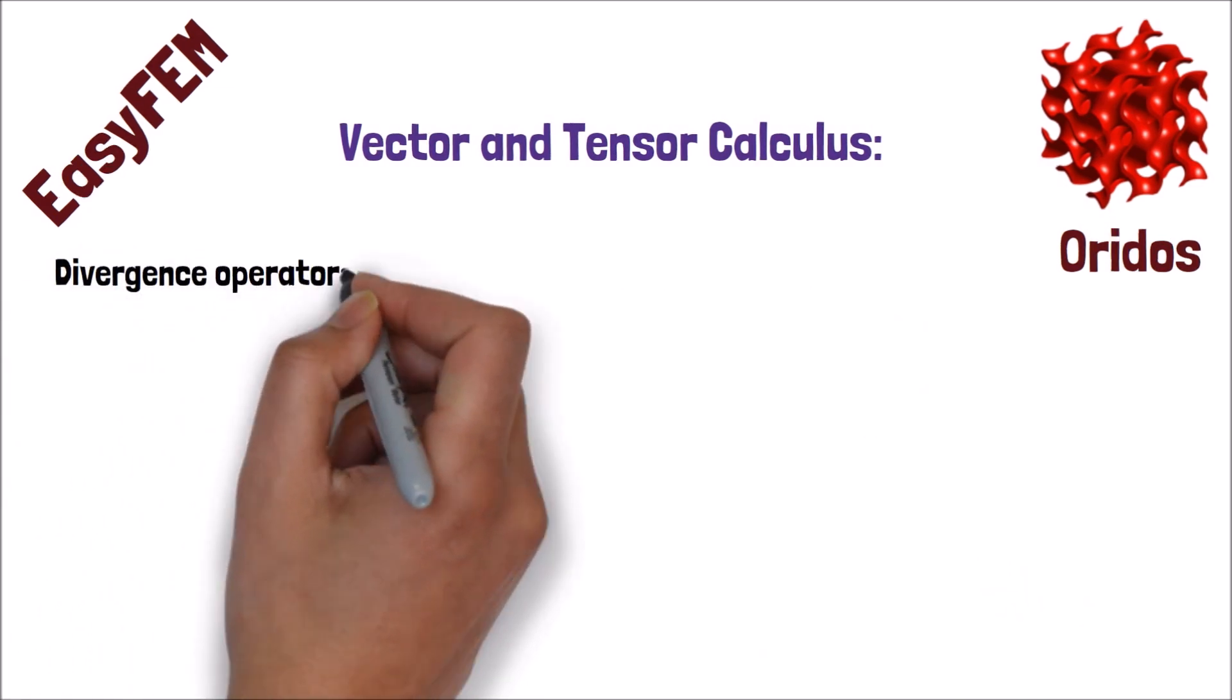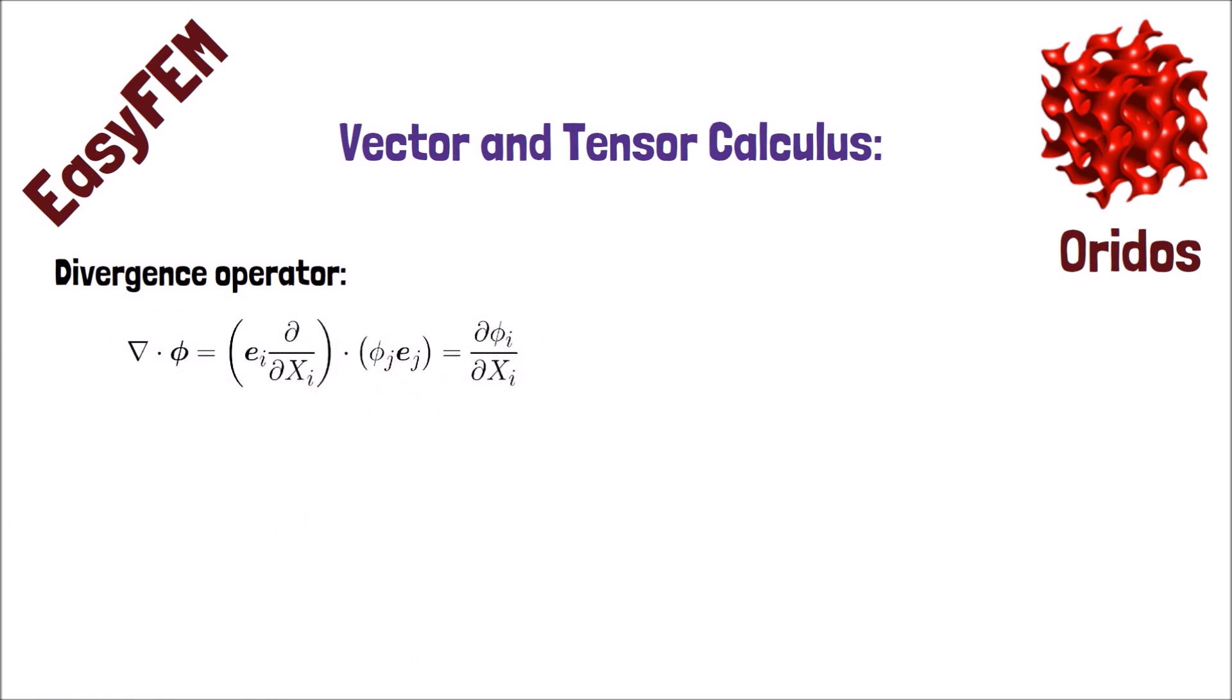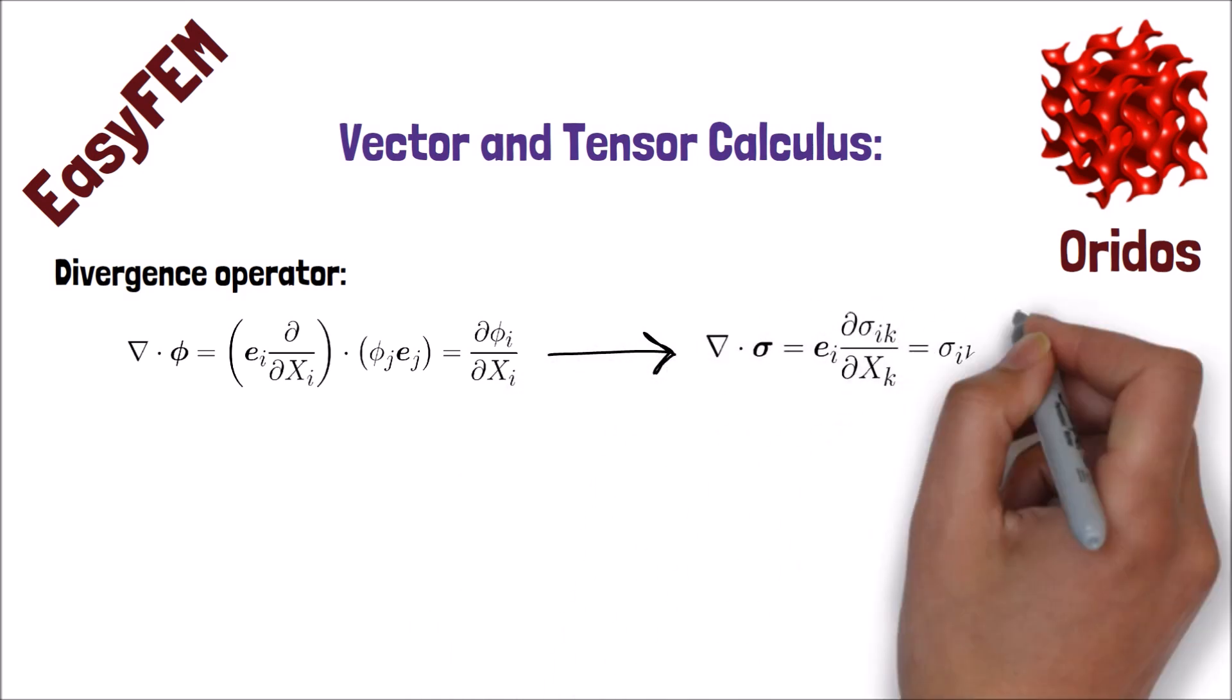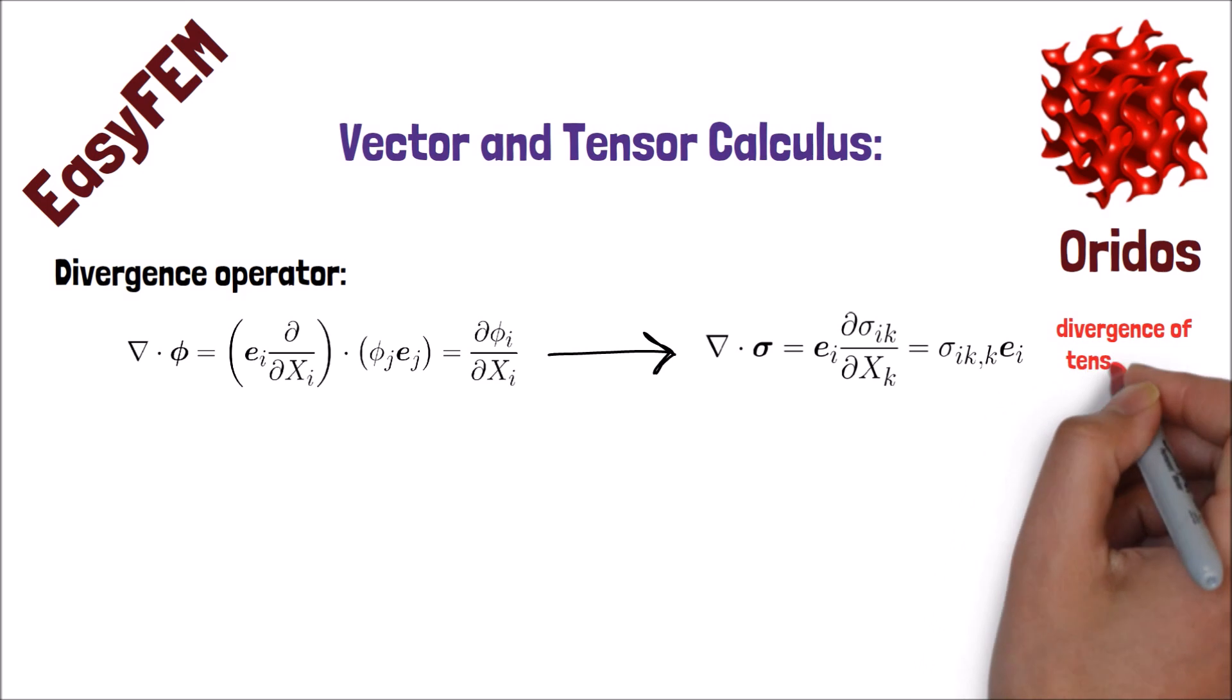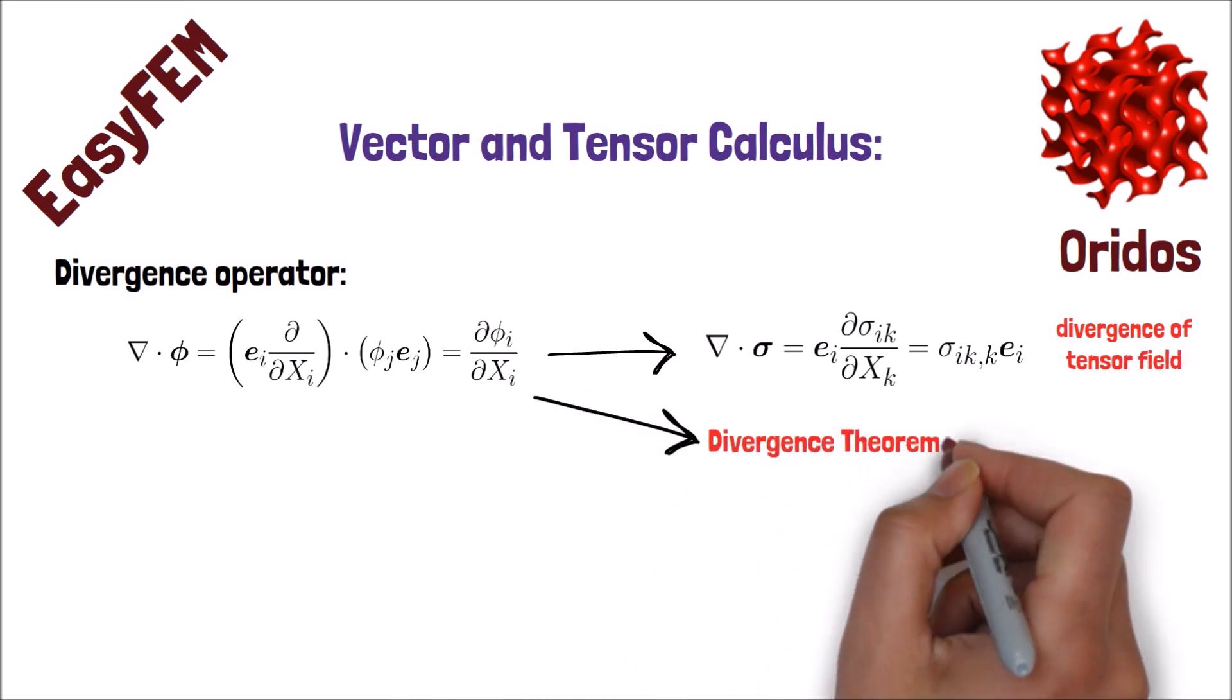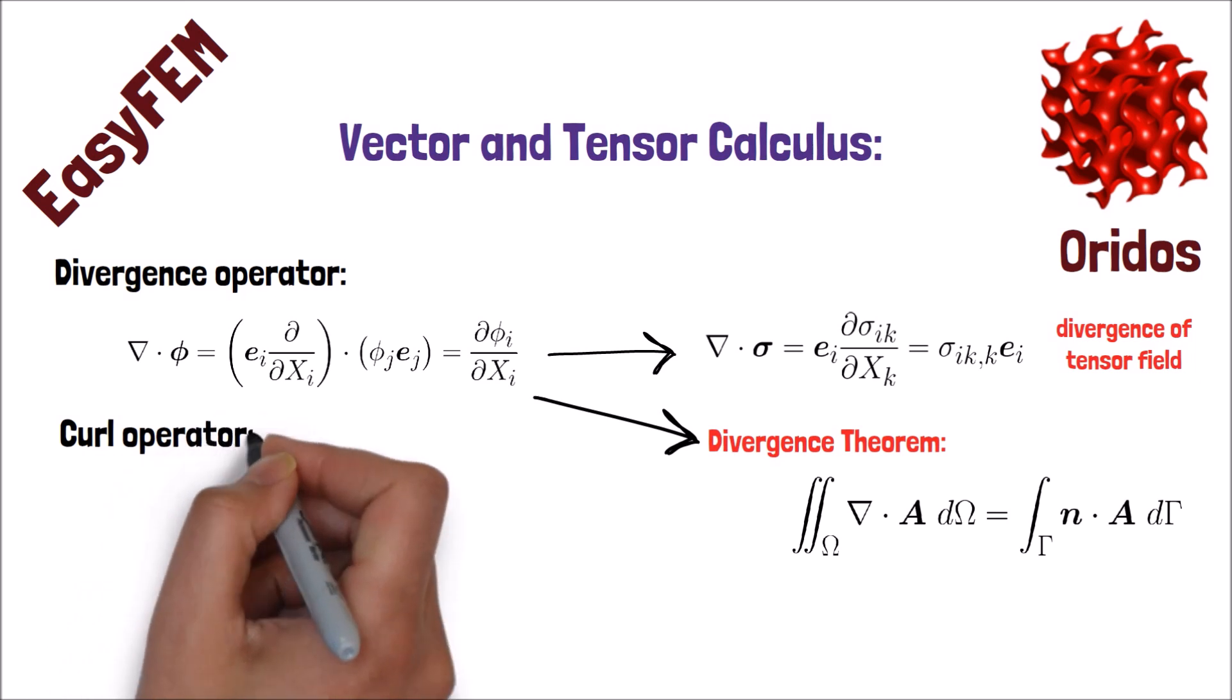Divergence is another del operator that operates on a vector or tensor field and produces a scalar field. For example, this is the definition of applying divergence on the stress tensor. I will talk about this and how to use the divergence theorem in the mechanics of continuum bodies.